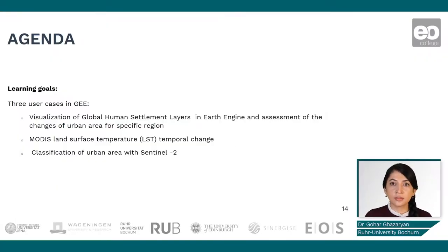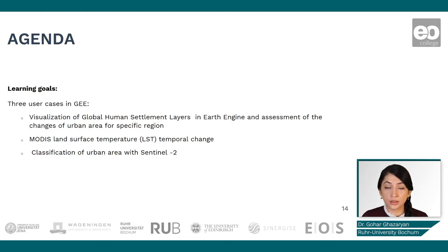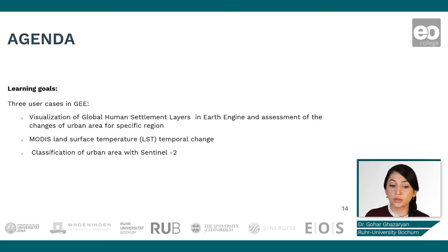In the practical section, we will have three use cases focusing on three different aspects of urban monitoring with remote sensing. First, we will look at changes in built-up area over time for a specific area of interest using the Global Human Settlements Layer. Then we will use MODIS-based land surface temperature data to assess the thermal environment in urban areas and look at the warming or cooling effect for specific areas. We will wrap up with a classification example using Sentinel-2 data and the random forest algorithm.